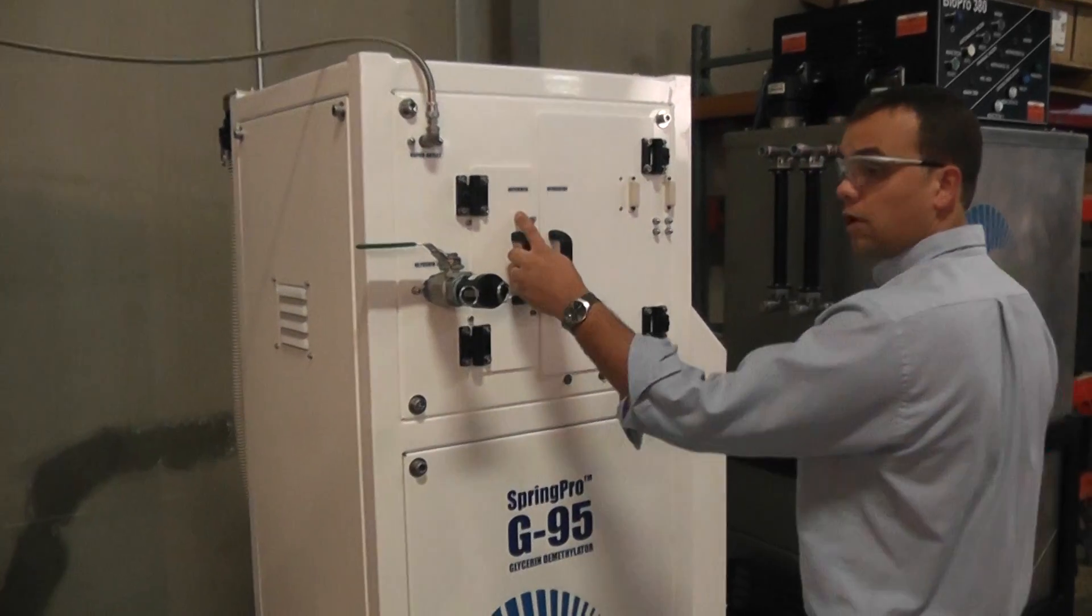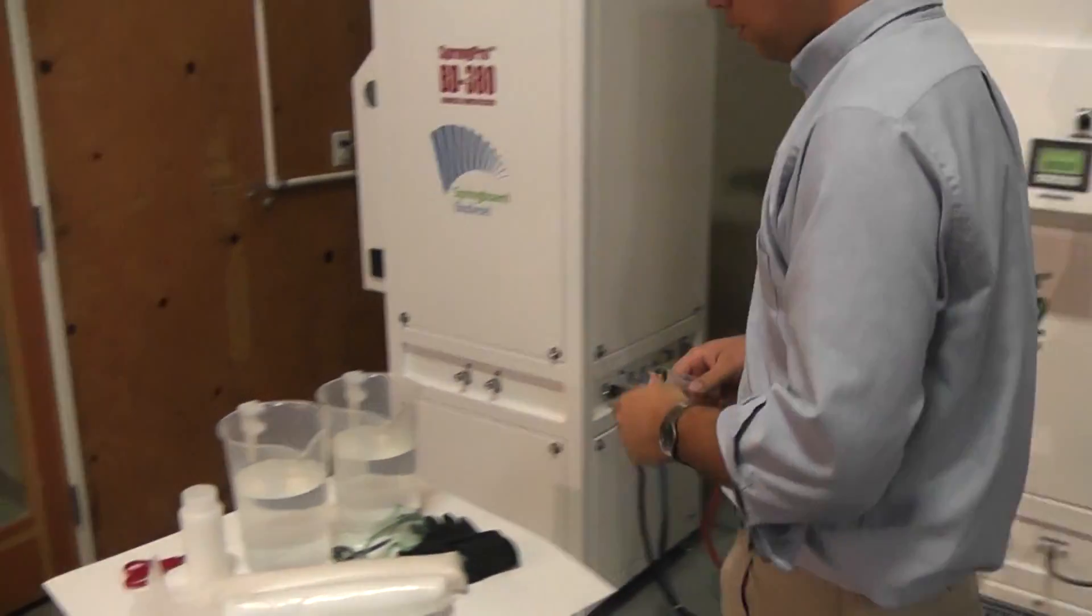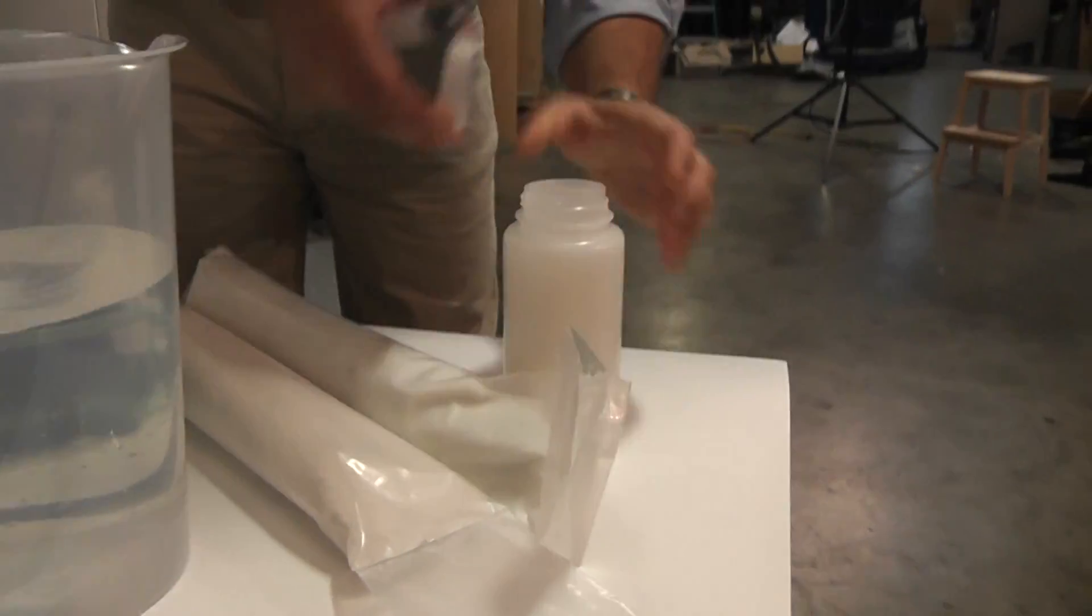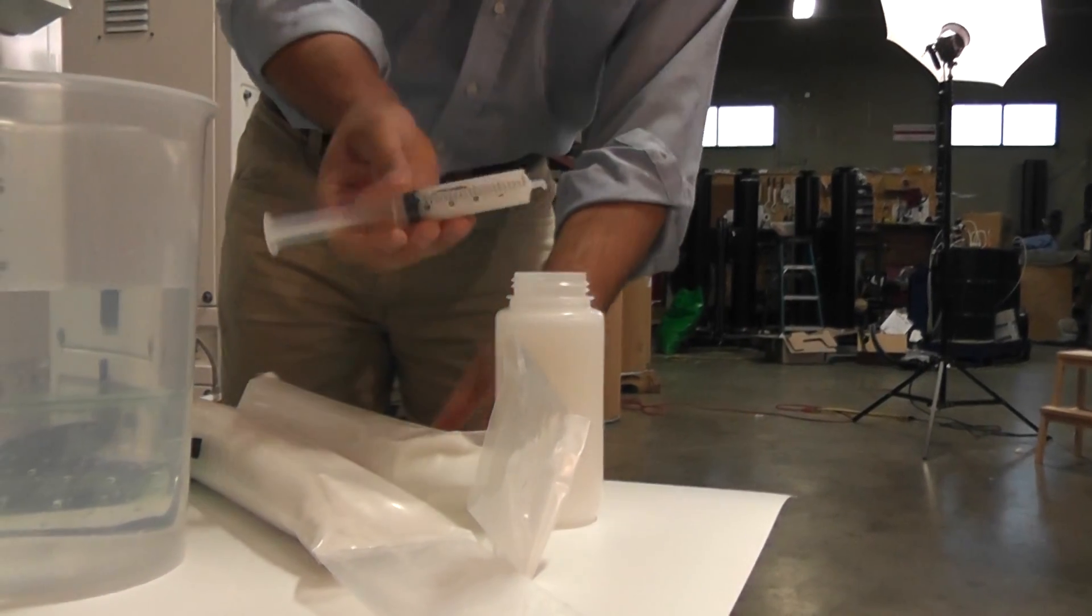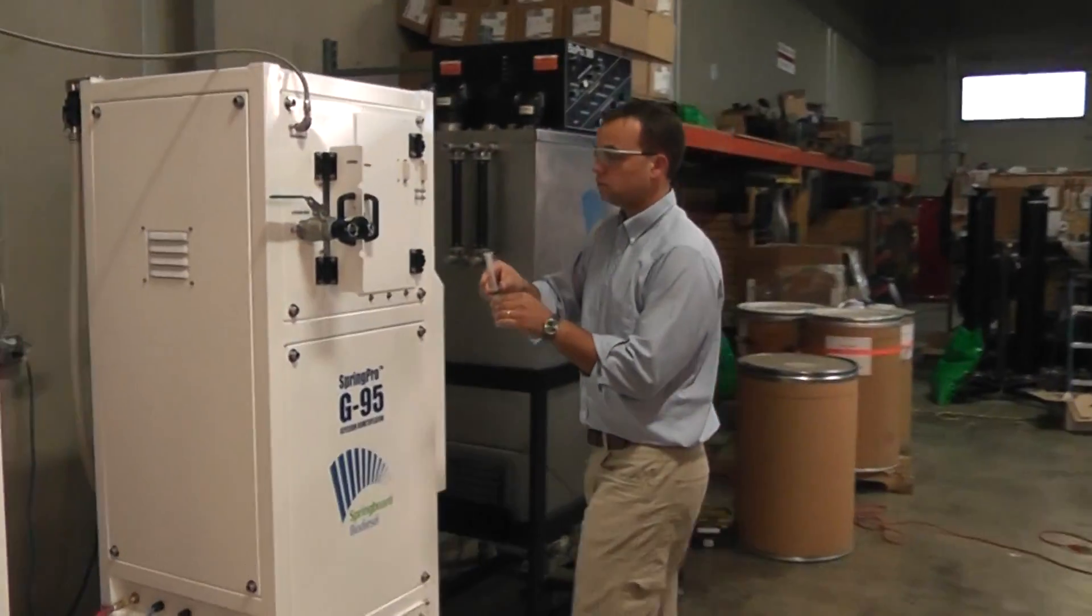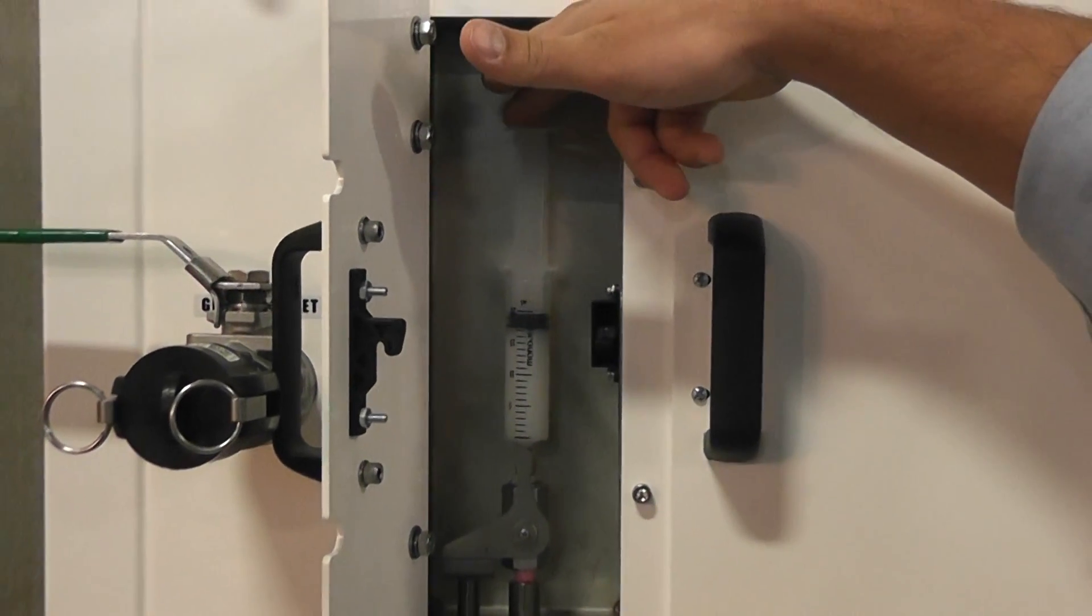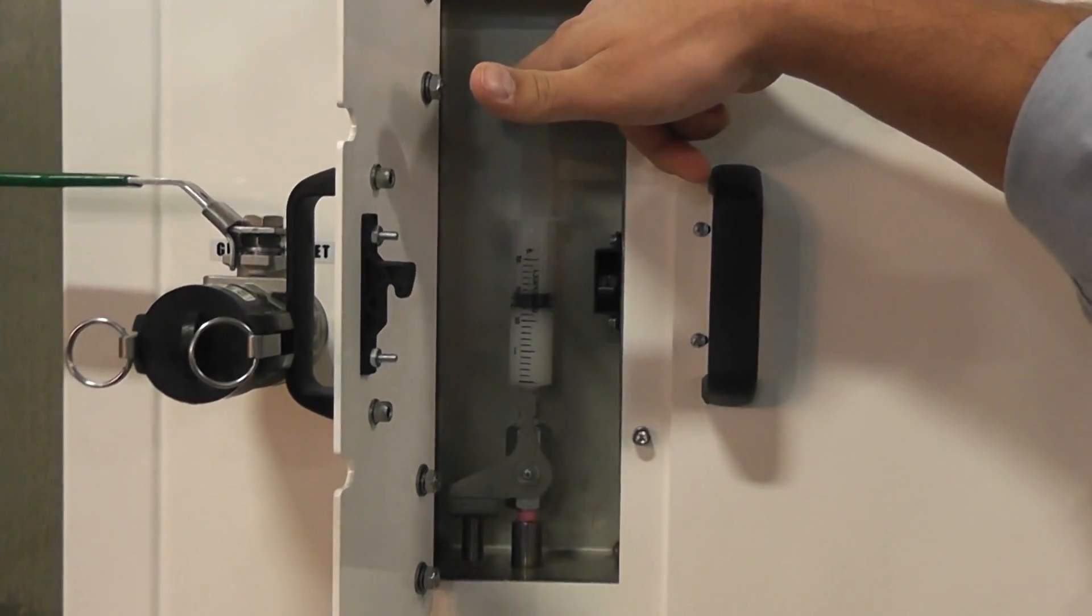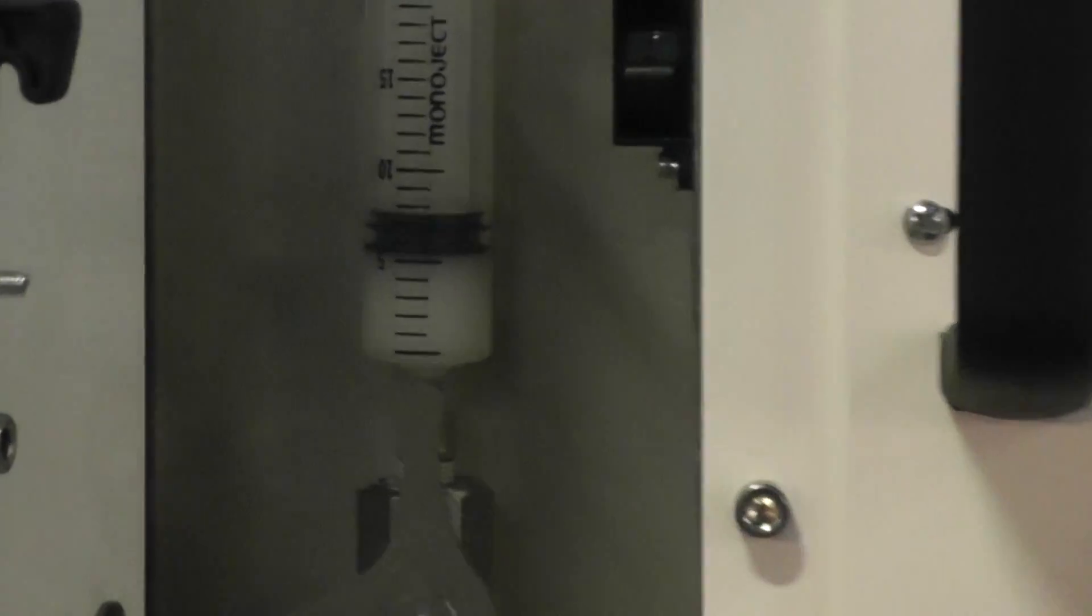It tells me to add the defoamer now, which goes to the G95. This is where our defoamer goes. I'm going to use this syringe here, which we just leave in there. I'm going to fill it up with a dose of defoamer. It just rests in there. Open the valve, let it go in. If I want to speed it up a little bit, I can help it. I can just let the vacuum do the work.